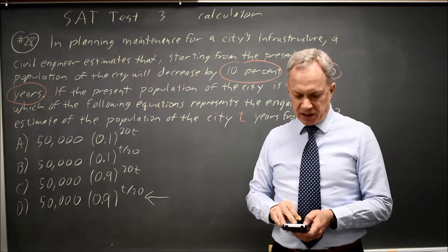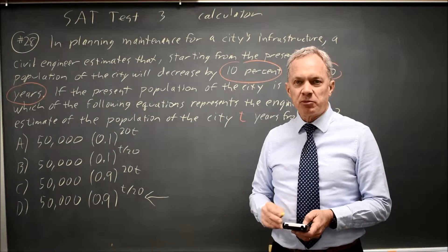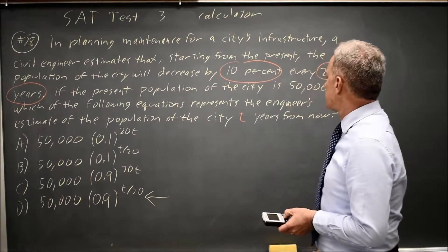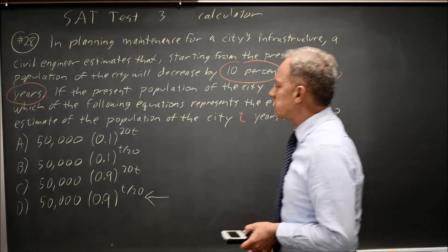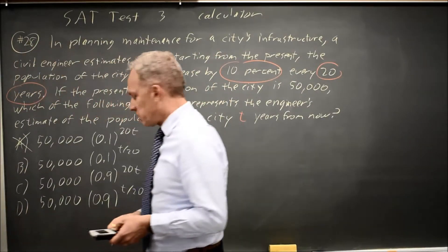I'm starting at year 0 at 50,000, and in year 20, my population has dropped to 0. I expect in year 20 to have lost 10%, not 100%, so A must be wrong.